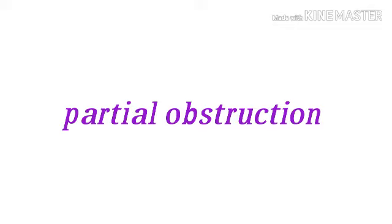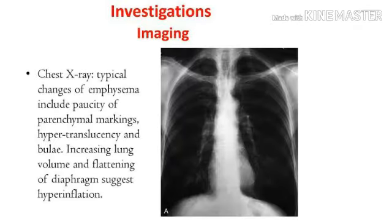The difference in airflow resistance is accentuated by coughing. The end result is air trapping distal to the obstruction, leading to over-distension of the part of the lung distal to the obstruction — this is called obstructive emphysema. The percussion note over such a lesion is hyper-resonant and breath sounds are diminished. Radiological examination shows hyper-translucency of the affected part of the lung.